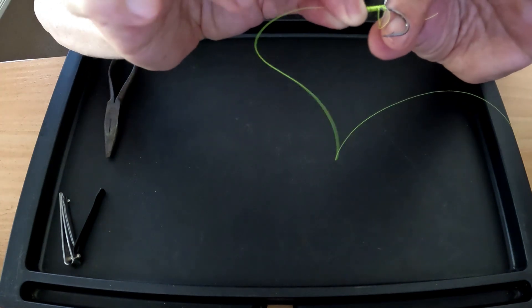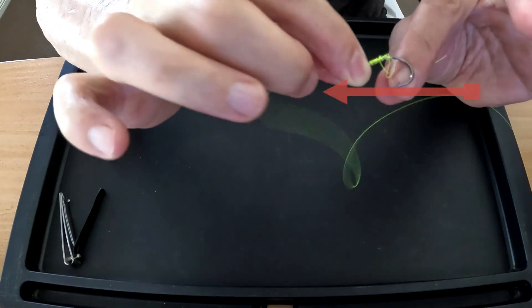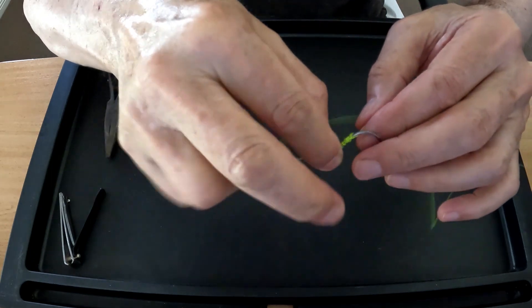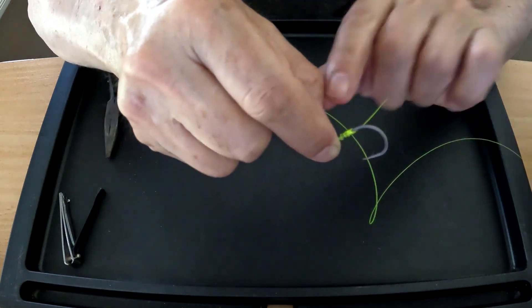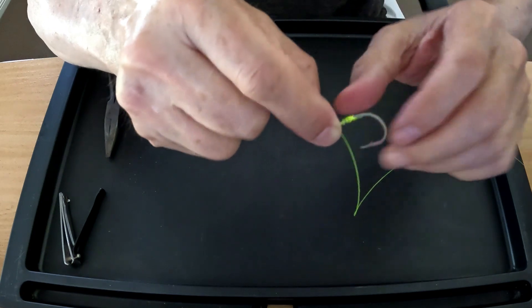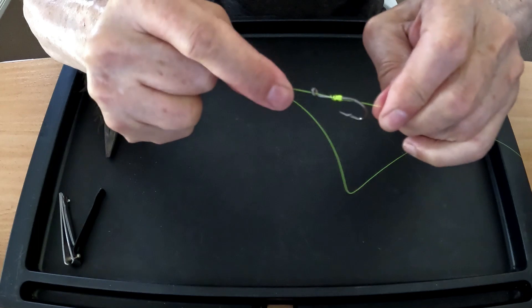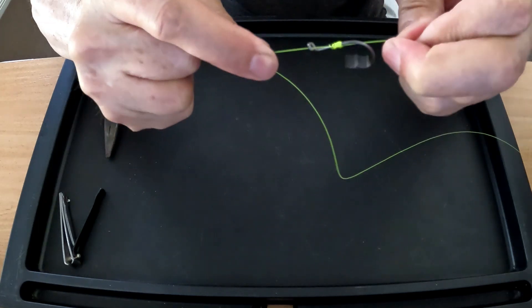What you want to do is pull that line first and use your fingers to do that. And as you can see, as you pull it, it starts to tighten this here. Then, you can use that tag to pull tight.